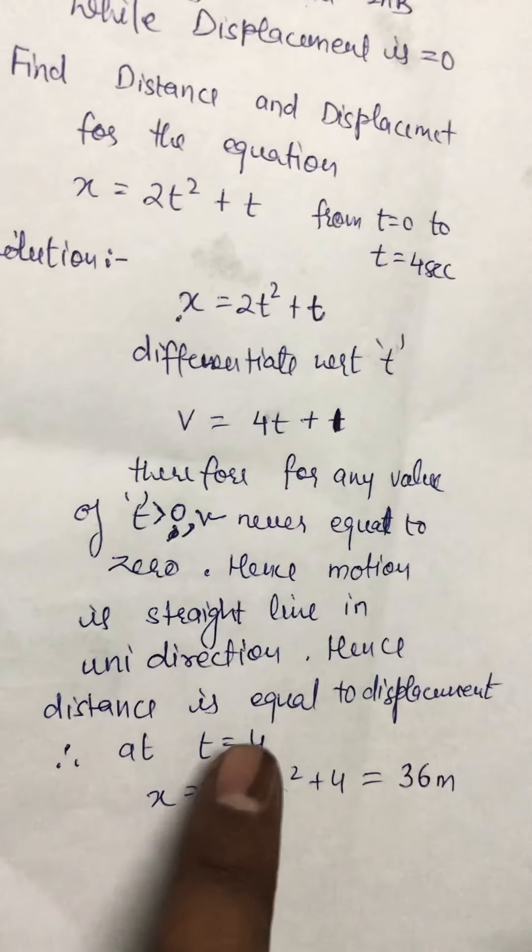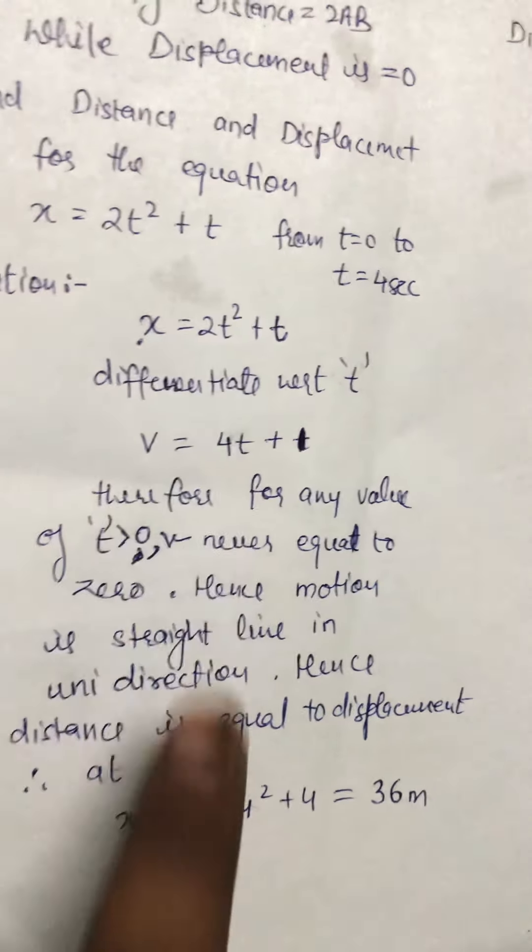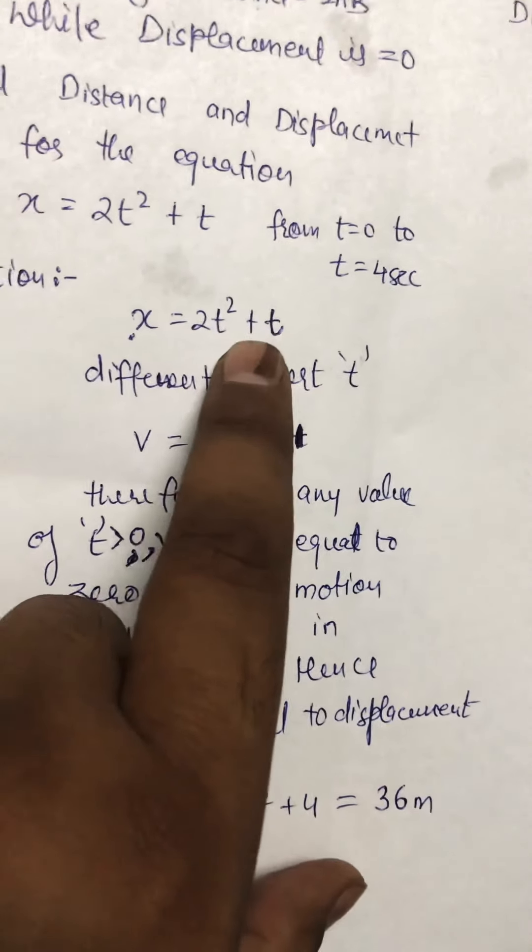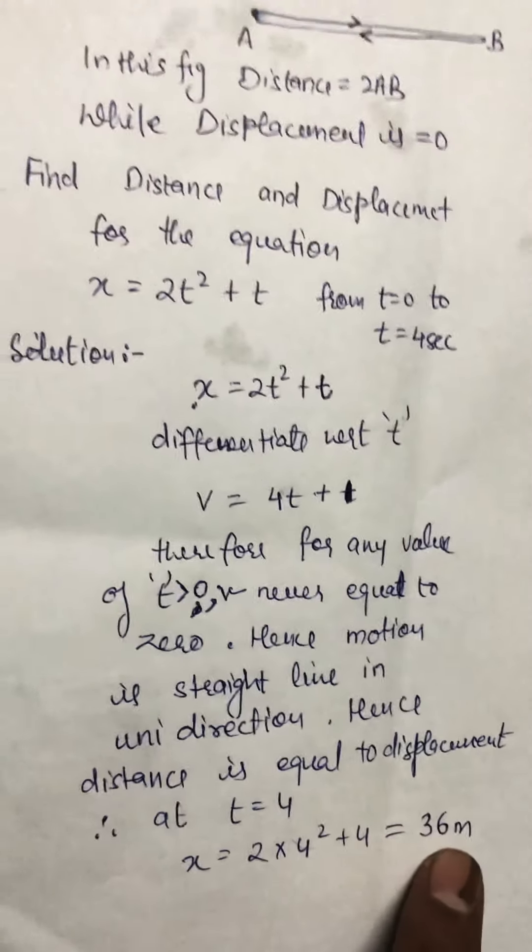Hence at t = 4, we put the value: 2 × 4² + 4, which is 2 × 16 + 4, equals 32 + 4, equals 36 meters.